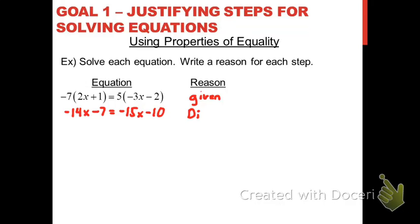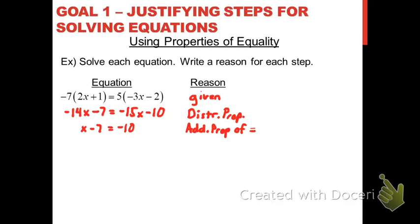Note that we did use the distributive property, but that's not a property of equality — the distributive property works whether or not you have an equation, whereas properties of equality only apply to equations. After distributing, we add 15x to both sides to cancel out the negative 15x, giving us x minus 7 equals negative 10 — that's the addition property of equality. Then we add 7 to both sides again, giving us x equals negative 3, also using the addition property of equality.